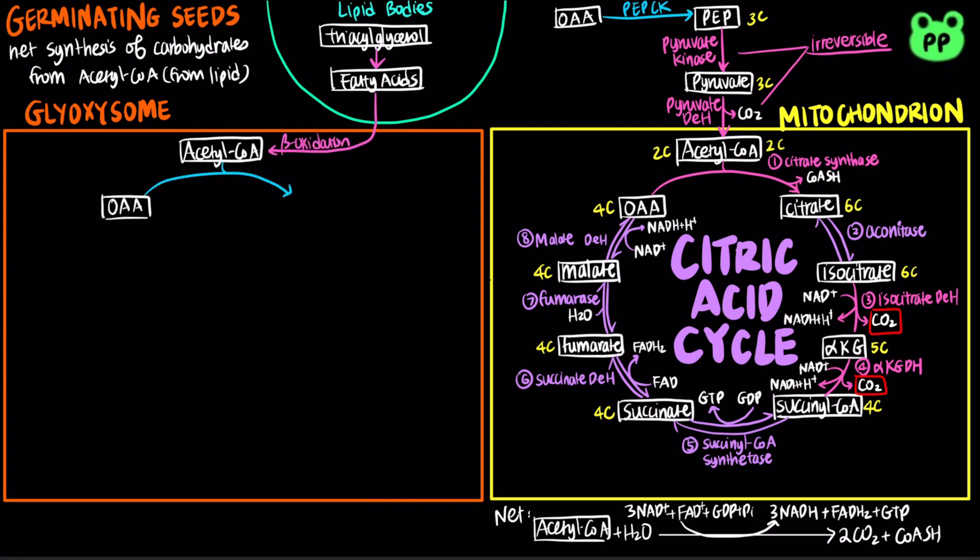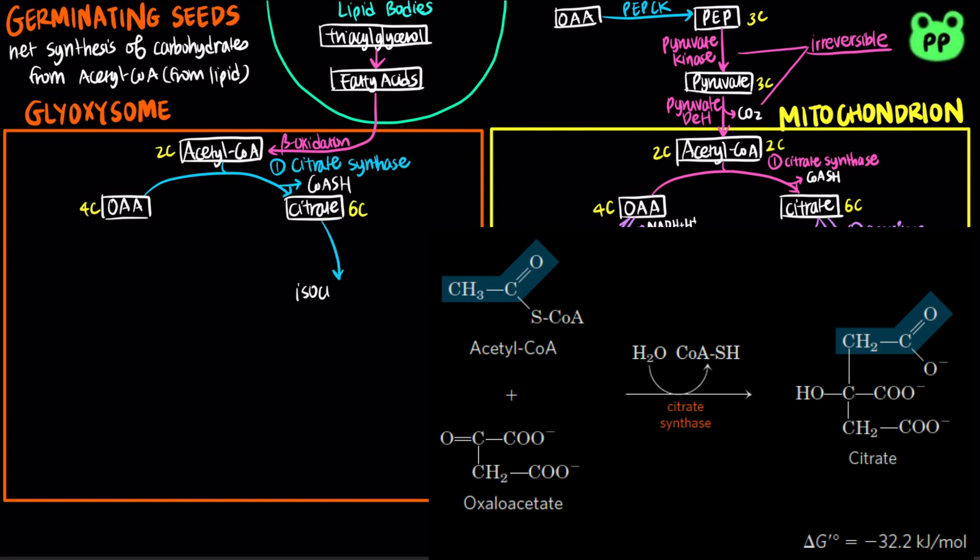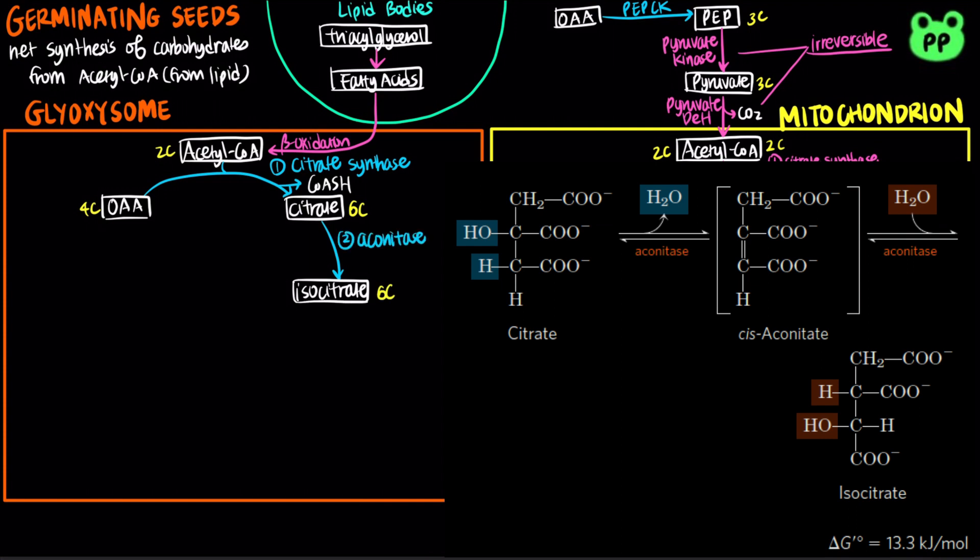Acetyl-CoA enters glyoxysome and it is converted to citrate by citrate synthase. Citrate is then converted to isocitrate by aconitase. Glyoxylate cycle shares the first two enzymes with the citric acid cycle.